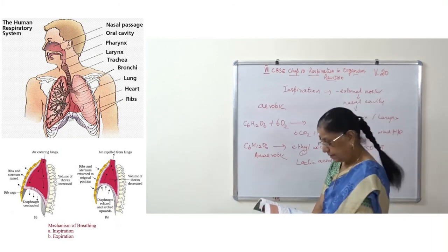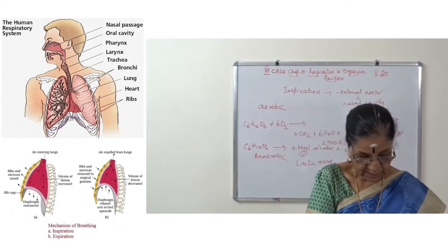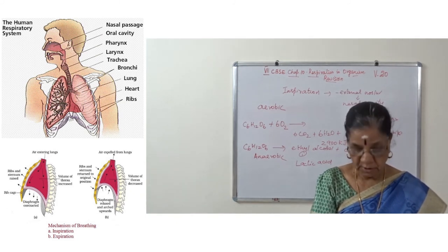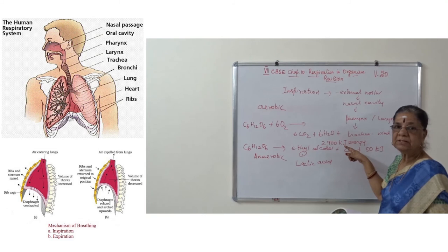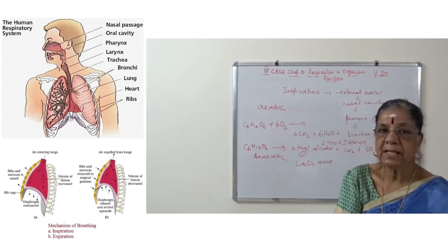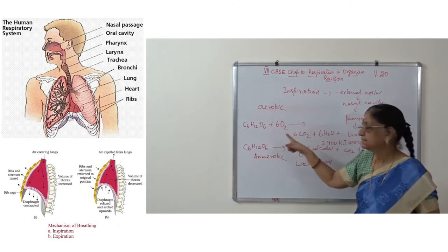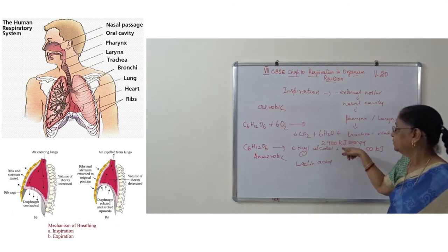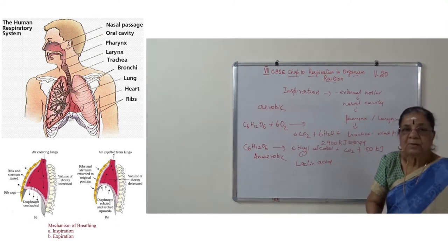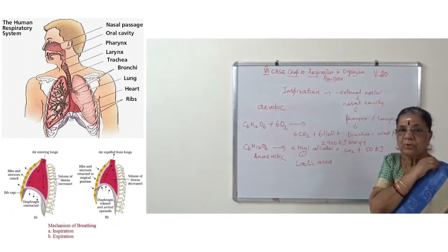Aerobic respiration takes place in the presence of oxygen and results in the formation of carbon dioxide and water, releasing 2900 kJ of energy. All animals and plants carry out aerobic respiration. The equation is C₆H₁₂O₆ + 6O₂ → 6CO₂ + 6H₂O + energy. This equation is the reverse of the equation for photosynthesis.